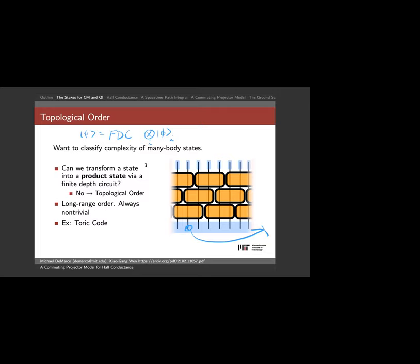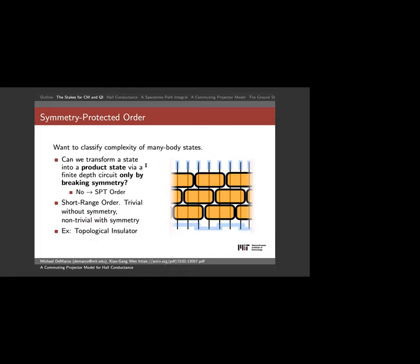The classic example — also a commuting projector model — is Kitaev's toric code, a great first introduction to long-range entangled states. But there's another case more relevant today: maybe I can transform the state into a product state, but only by breaking some certain symmetry. Things aren't long-range entangled — they're entangled with nearby stuff — but in a way that I can't undo without breaking an overlying symmetry. Without caring about symmetry it's trivial; requiring that symmetry makes it non-trivial. That's called symmetry-protected topological order, or SPT order.